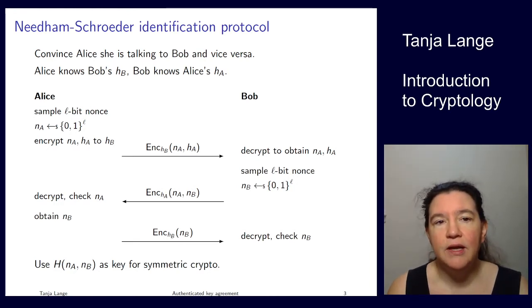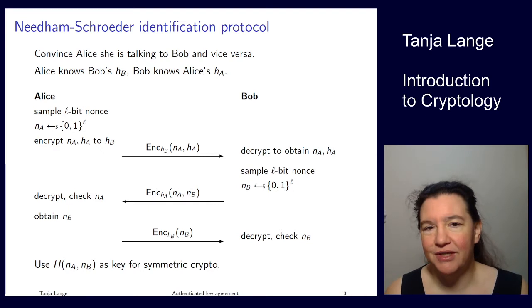So in this public key version, each of them has a public key. Alice has H_A, Bob has H_B, and they know each other by these keys. And in the end you don't care whether it's your bank, as long as the bank is the one which you know by this key, and that is what has the account information, is dealing with your money.